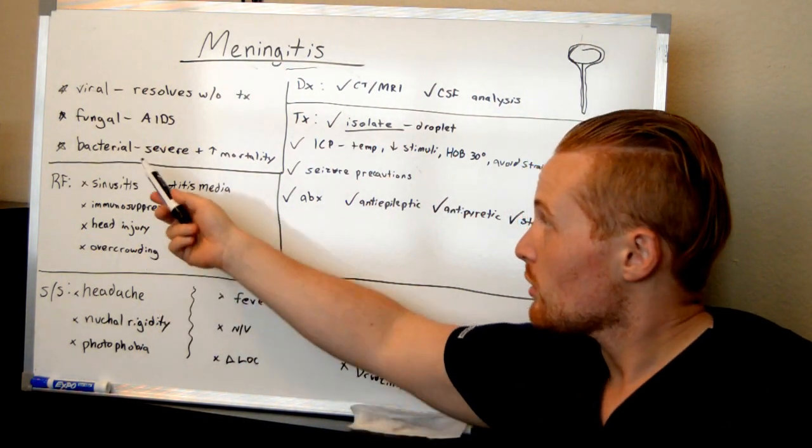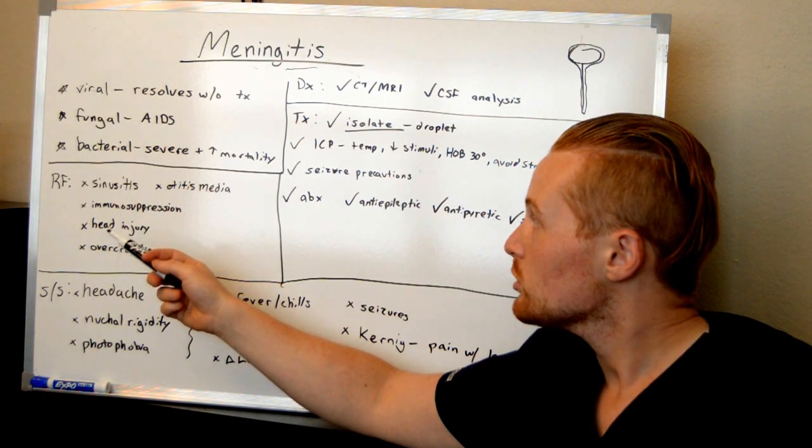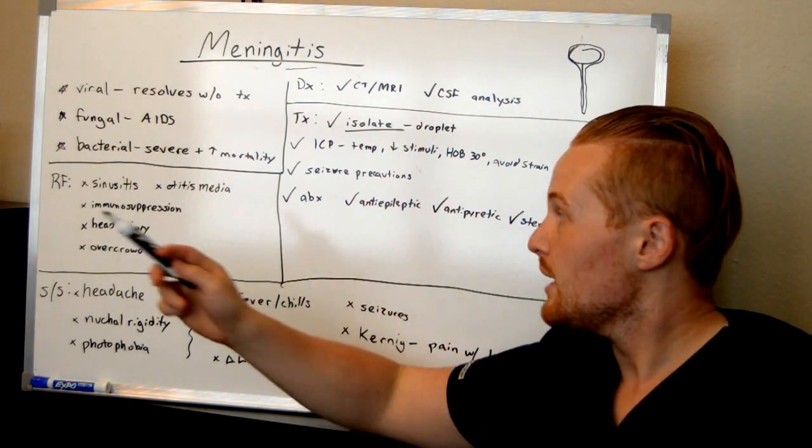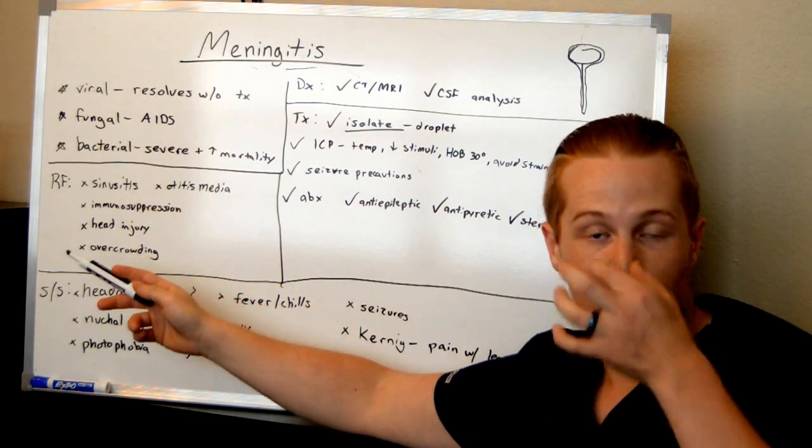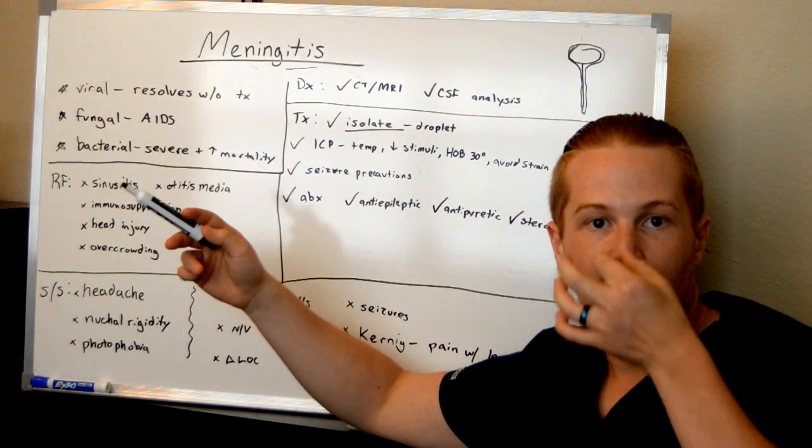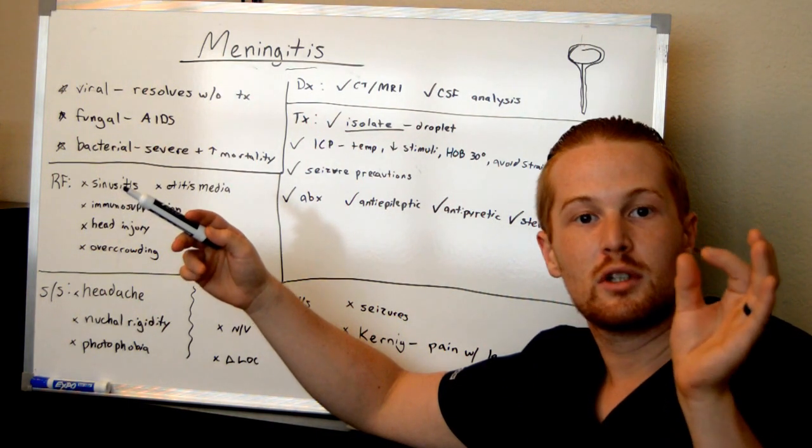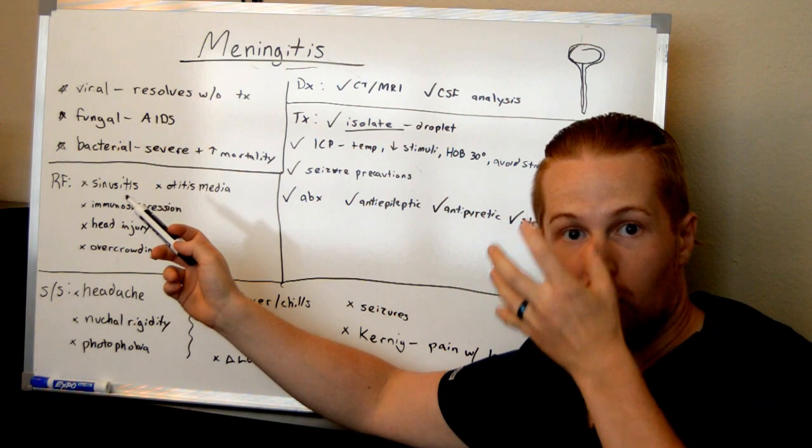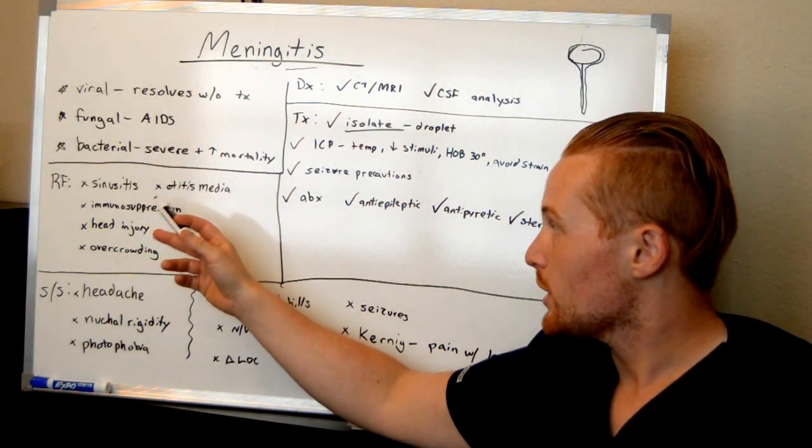So that's a risk factor for bacterial meningitis. Also, having another infection, especially something around the head, such as an ear infection or sinusitis, which is an infection of the sinuses, because the distance from the sinuses or from the ears to the brain and the brain tissues is really close.